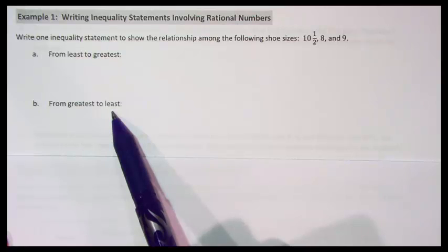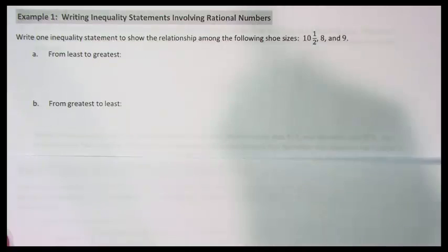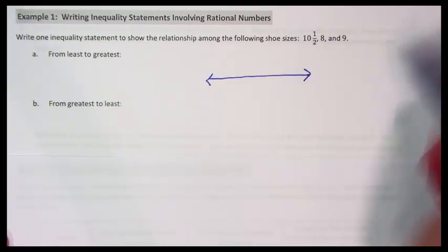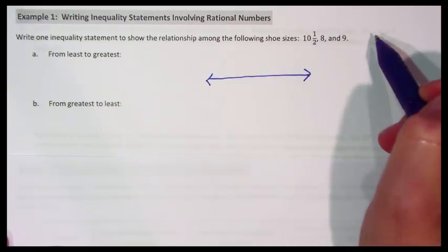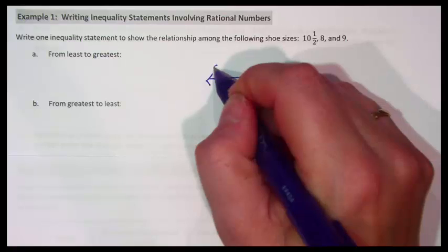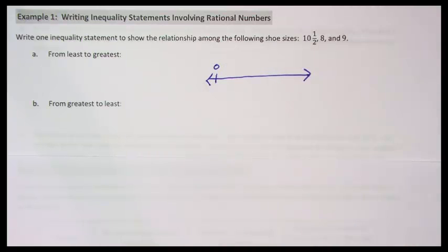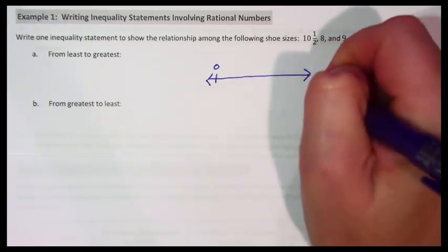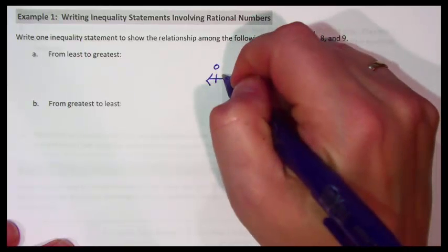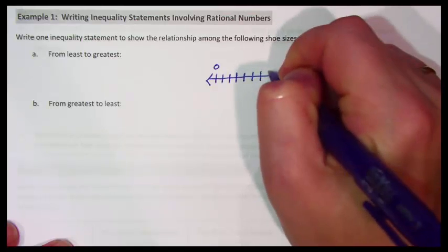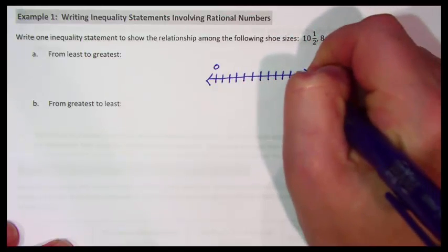Sometimes it helps to put these numbers on a number line before we write our inequality statement. So I'm going to draw a number line. All of my numbers are positive, so I don't need to put zero in the middle — I don't need any negative numbers. I'm going to put zero all the way over here. My biggest number is 10½, so I need to go up to at least 11: 1, 2, 3, 4, 5, 6, 7, 8, 9, 10, 11, 12.